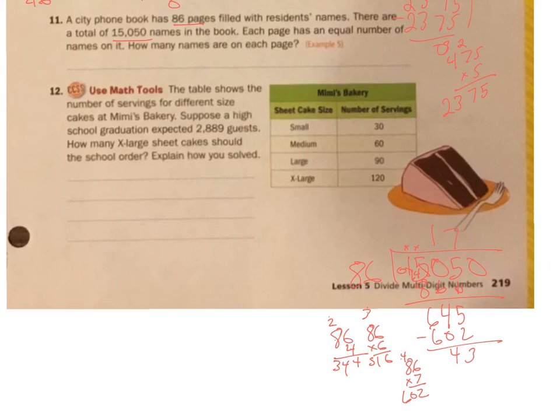7 times 8 is 602. Subtract that out. I get 3, 4, and bring this 0 down. 430. Well, I know 4 was 344 and 6 was 516. So I'm going to try between those two. So I'm going to do 86 times 5. That is 6 times 5 is 30, and then 5 times 8 is 40, plus 3 is 43. That's exactly what I needed. 430. Subtract that out. I get 0. There's no other number to bring down. So, 175 names on each page.